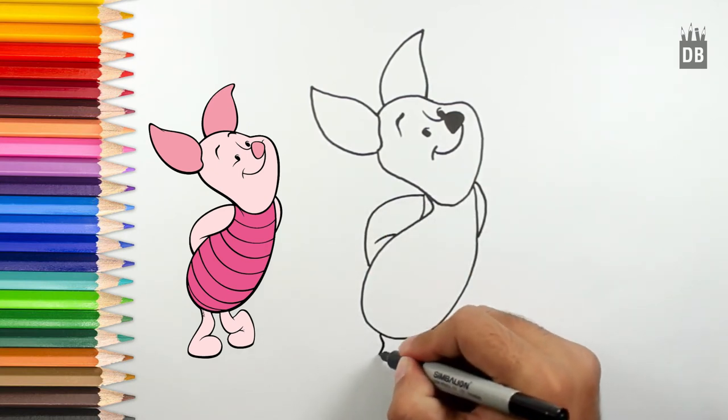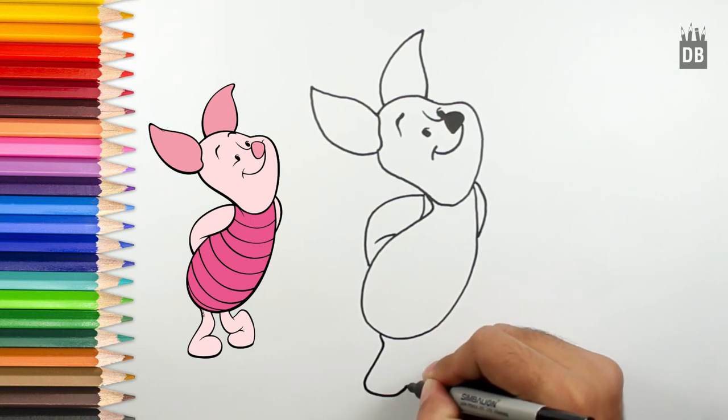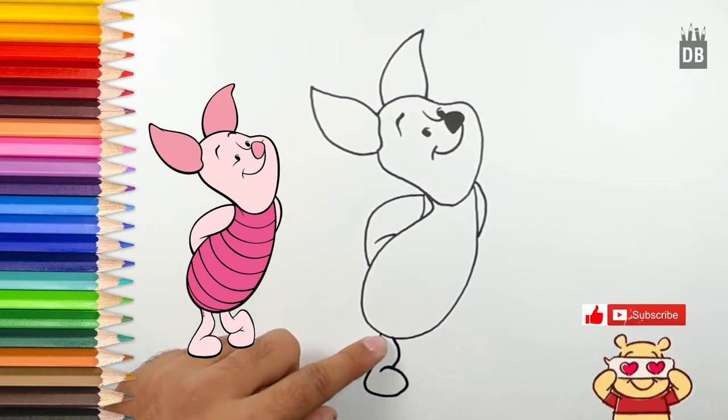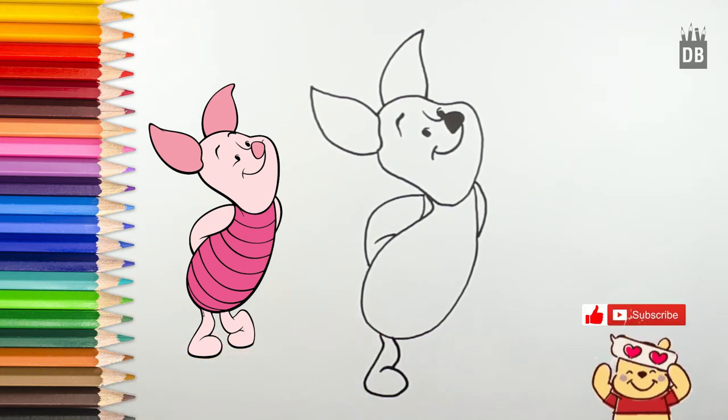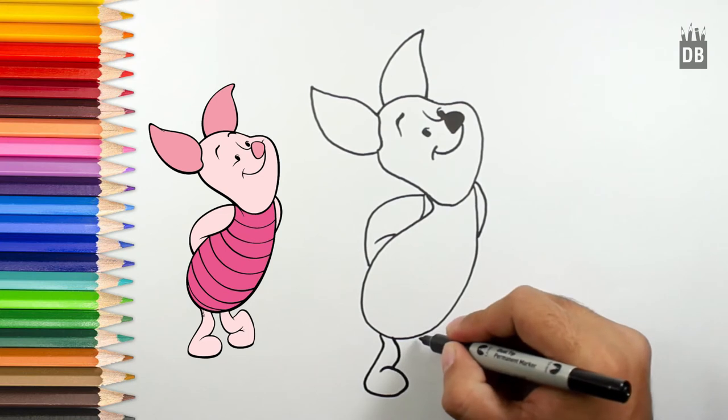For the legs, thin from the upper side and wider from the lower side. He's bending his legs.